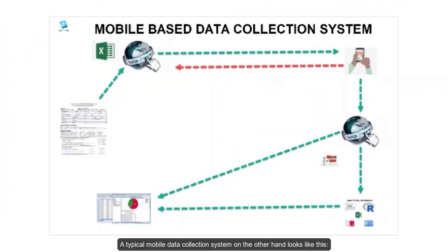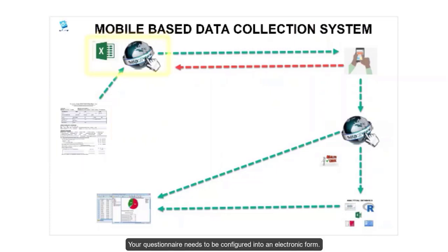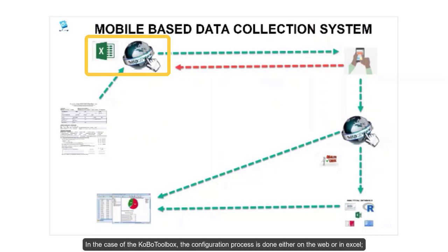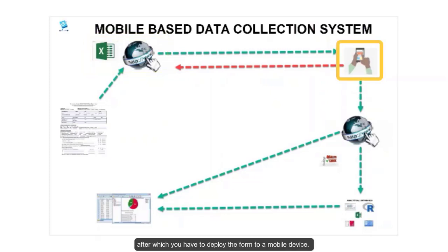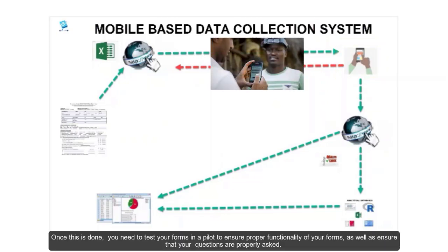A typical mobile data collection system on the other hand looks like this. Just like with the paper-based system, you need to have a properly designed questionnaire. Your questionnaire needs to be configured into an electronic form. In the case of the Kobo toolbox, the configuration process is done either on the web or in Excel, after which you have to deploy the form to a mobile device. Once this is done, you need to test your forms in a pilot to ensure the proper functionality of your forms as well as ensure that your questions are properly asked.